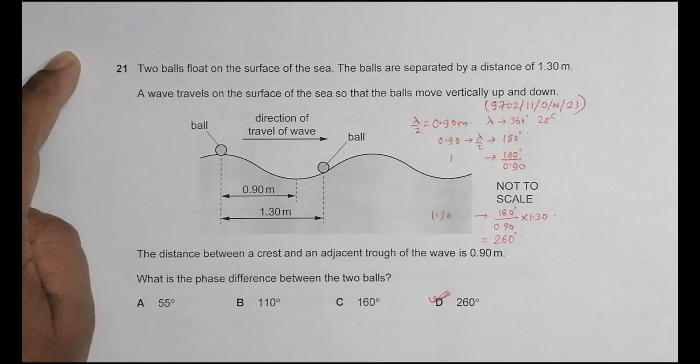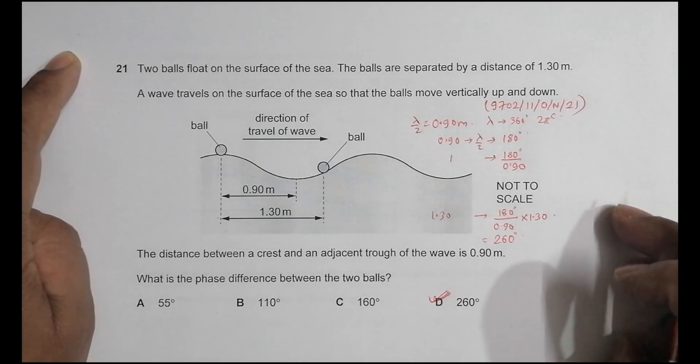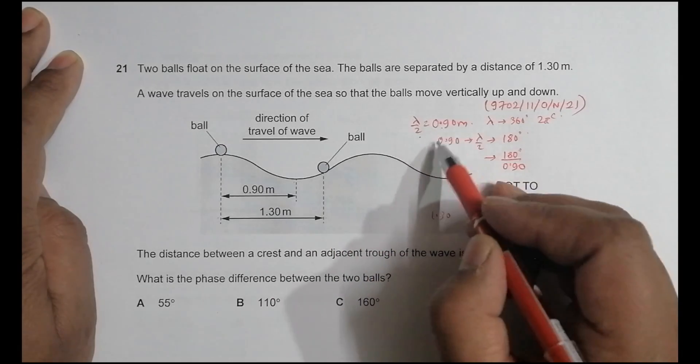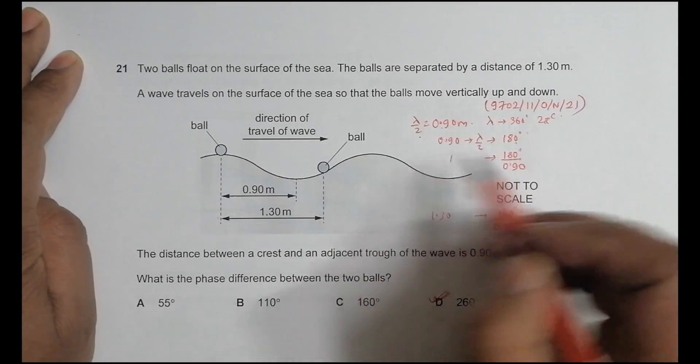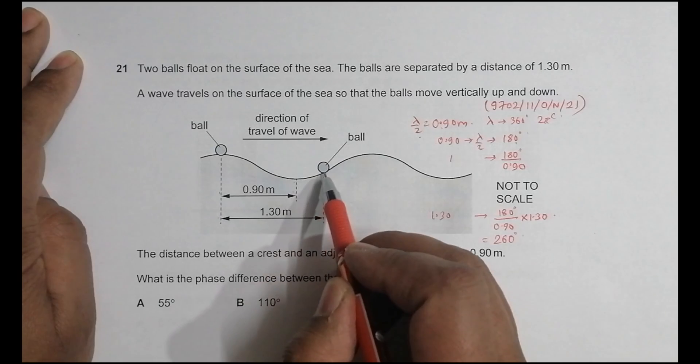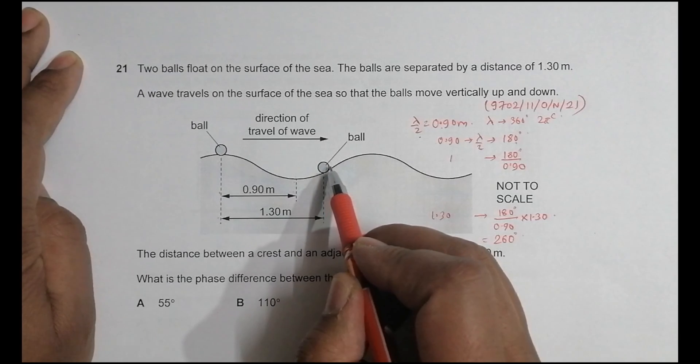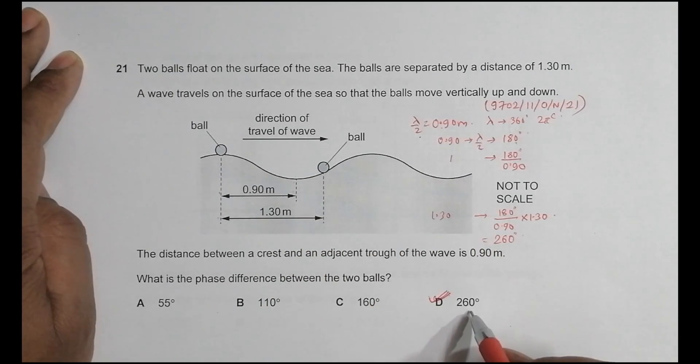Now let us see, if you don't know this answer, there's also a technique there. The technique is that you have to know that the half wave is 180 degrees. So this is 180 degrees. And this should be more than 180, more than 180 and less than 360.